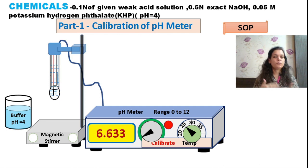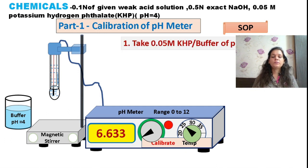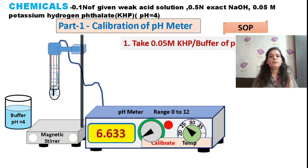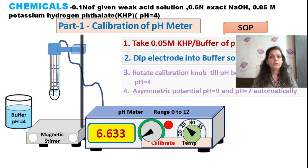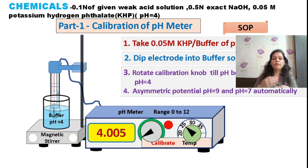To calibrate the pH meter, you can use standard buffer solutions of pH 4, 7, or 9 available in the market, or use 0.05 molar potassium hydrogen phthalate solution which gives a constant pH of 4. Dip your electrode in the buffer solution, measure the pH, and if it does not show the correct value, adjust using the calibration knob. When calibrating for pH 9 and 7, adjust the asymmetric potential developed by the glass electrode using the knob accordingly.